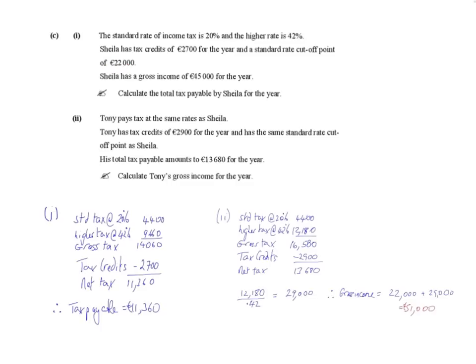Now this person is earning €45,000, but what the standard rate cutoff point means is up to €22,000 of earnings that person must pay 20% tax. So this person has to pay 20% of €22,000 as they earn more than that amount. So you work that out by multiplying 22,000 by 0.2 to get €4,400.